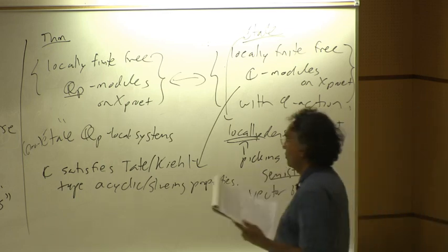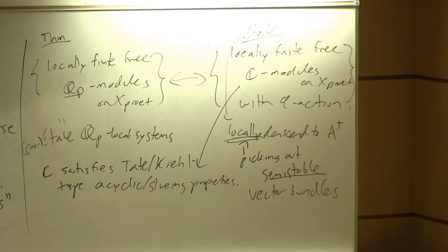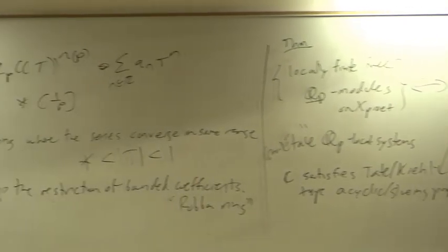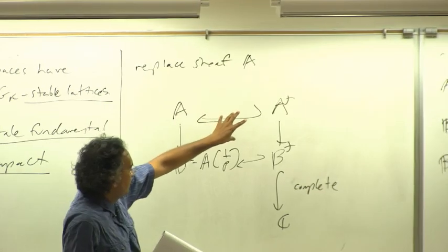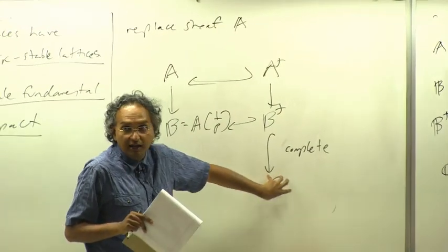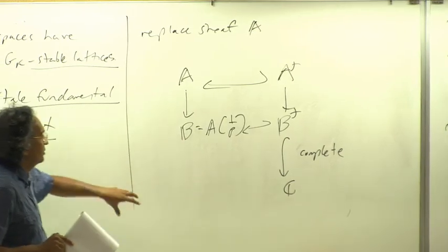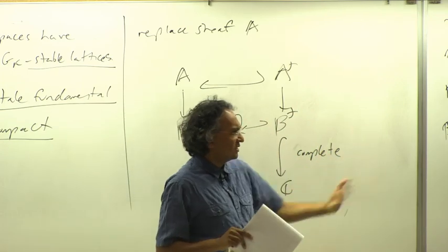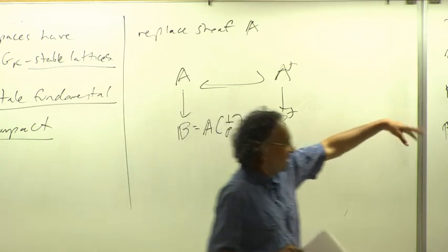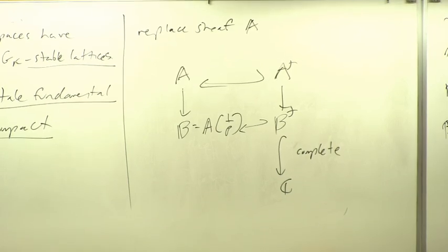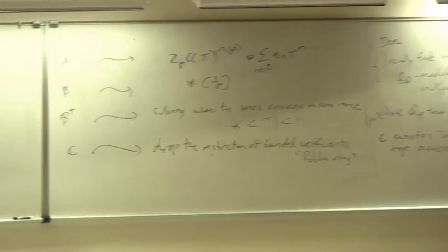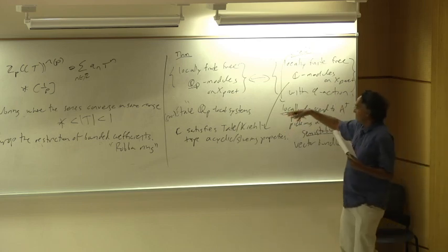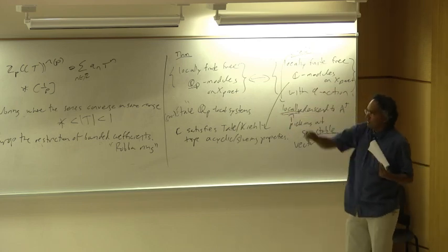The sheaf C satisfies Tate and Kedlaya-style acyclicity and gluing properties. On an affinoid perfectoid, these things are given by evaluation, so modules correspond to sheaves. There's a fact that you can glue over some cover, which is not true of something like B or B-dagger — that's one of the reasons you have to go to C. Even before this relative story came along, this Robba ring passage was known because it's useful for many other reasons — for instance, if you want to write down the various Fontaine functors on Galois representations, like the crystalline functor and the de Rham functor.